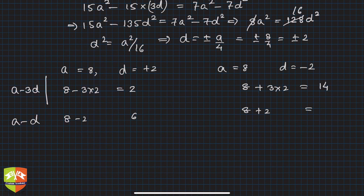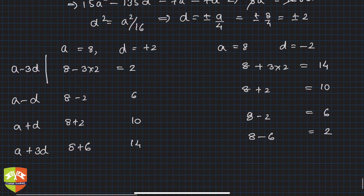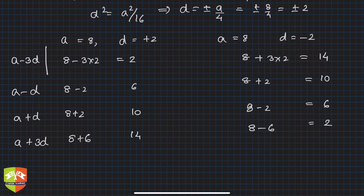The third is a plus d, so 8 plus 2 equals 10, or 8 minus 2 equals 6. Finally, a plus 3d is 8 plus 6 equals 14, or 8 minus 6 equals 2.